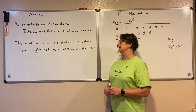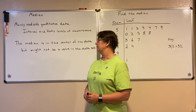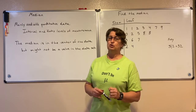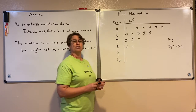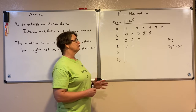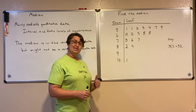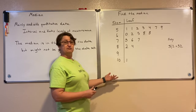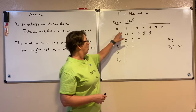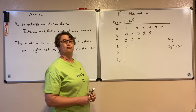The median is the center of the data — it's literally in the middle of your data — but it might not be a value in that data set. Here's an example where we're going to find the median. Remember, the first thing we need to do is put our numbers in order from least to greatest or greatest to least. In a stem and leaf plot, it's nice because our numbers are already in order from least to greatest, so that job's done for me.